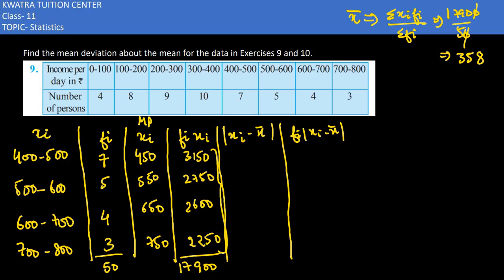What do we need to do? Summation f×|x - x̄|. And then you would be taking the mod of it. 450 minus 358. In 550, 358 is the mean. Then you have 292. Then you have 392.